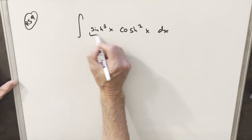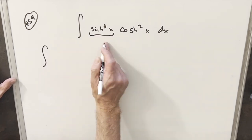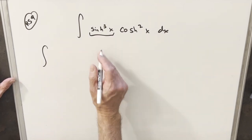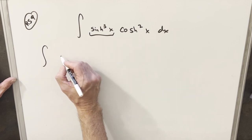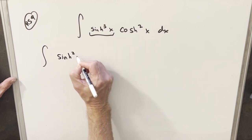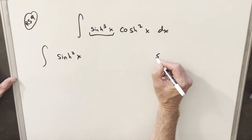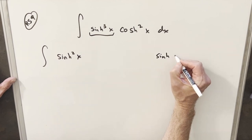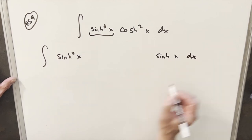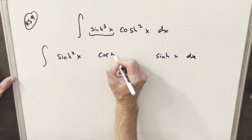So with that in mind, I think I'm going to focus on my sinh here and just strip one of these out in order to make a u substitution. So I'll keep a sinh squared x here, but then we'll bring one of these all the way over here, and we'll still have our cosh squared x.